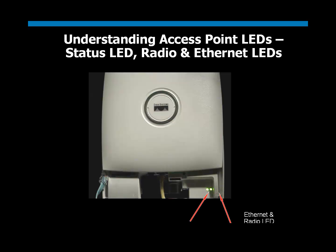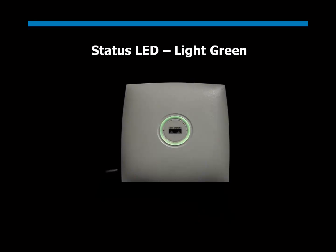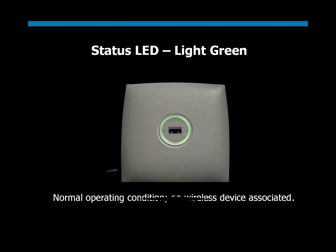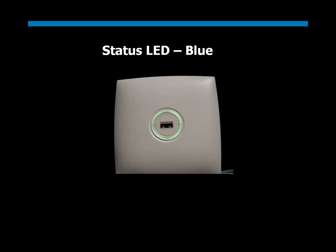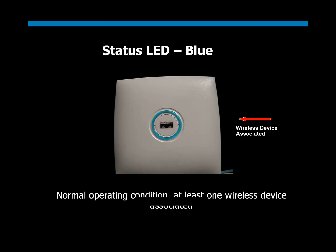Let's first look at the status LED. Under normal circumstances, as soon as a Lightweight Access Point registers to the Wireless LAN Controller, the status LED will indicate light green. This means the LAP is operating as expected and has no wireless clients connected to it. When a wireless client is associated to a Lightweight Access Point, the status switches from light green to light blue, indicating normal operation but with associated wireless clients.